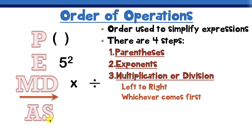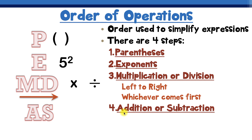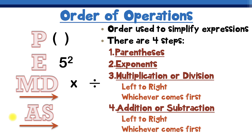Step number four uses the letters AS, which stand for addition or subtraction. Again, this is done from left to right, just like step three — whichever comes first. So if we have subtraction first we do subtraction first, and if we see addition first we do addition first.